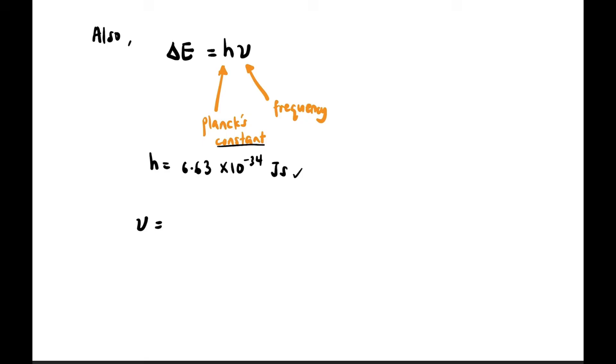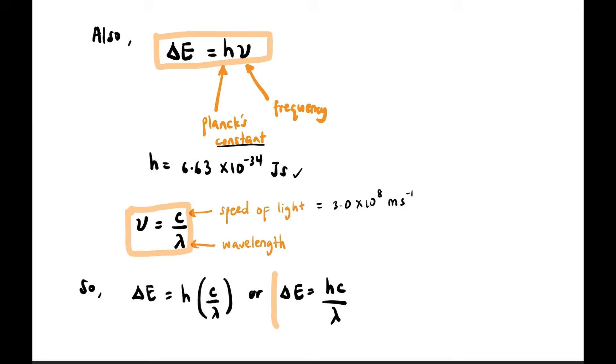Light also has speed and wavelength, so frequency equals c (speed of light) divided by lambda. Lambda is wavelength, and the speed of light is a constant value of 3.0 times 10^8 meters per second. Combining these two formulas, delta E equals h times c over lambda, or simply hc over lambda. These are the three formulas you need to remember.